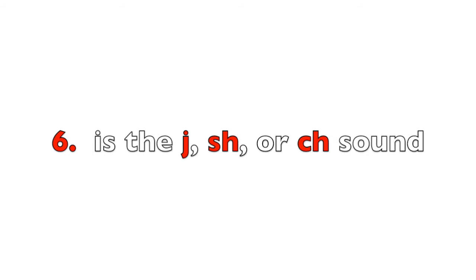Digit 6 is a bit more complicated — it is three letters or combinations of letters but really one sound. Digit 6 is the J, SH, or CH sound. Think about the position of your tongue, teeth, and lips when you say J, SH, CH — they are essentially the same sound. Memory aid: if you look at the 6, it looks like a backwards J. All three sounds essentially make the J, SH, CH sound.